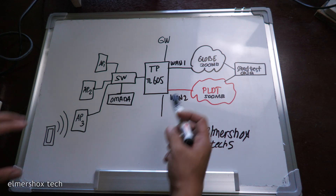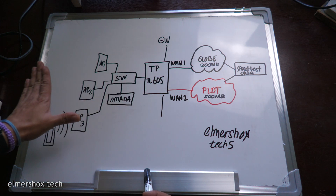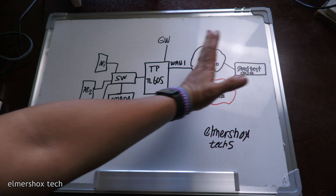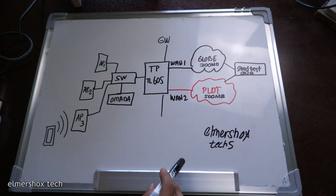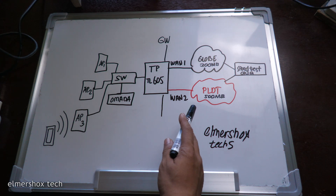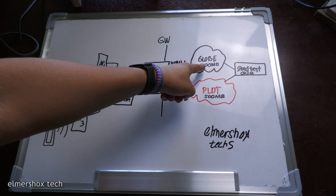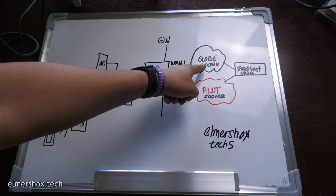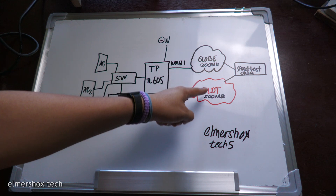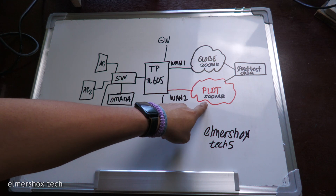In this setup, this is my LAN side and this is the WAN side. The setup is very simple: I have Globe 300 Mbps and PLDT 500 Mbps.